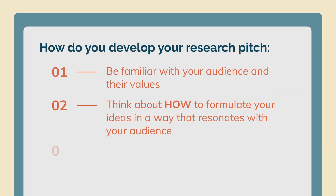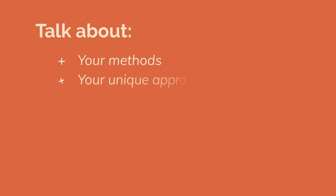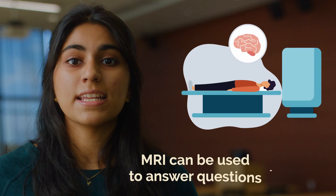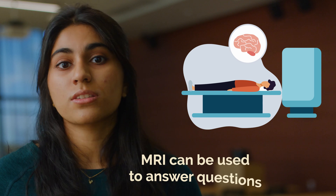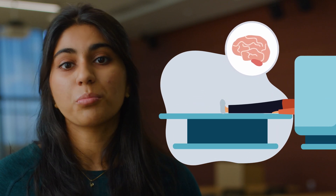After you communicate your research question, you need to communicate your approach. Talk about the methods you used and the unique approach that your research took. Definitely include the experiment design and technology that you used. With your Alzheimer's research questions, you can share the approach you want to use in order to analyze the brain. MRI, or magnetic resonance imaging, can be used to answer these questions, both from a structural and functional point of view.